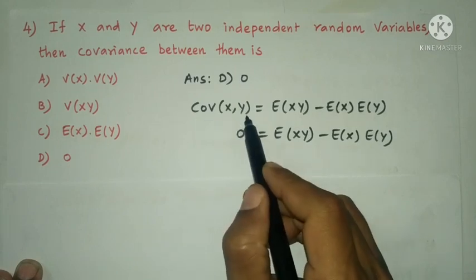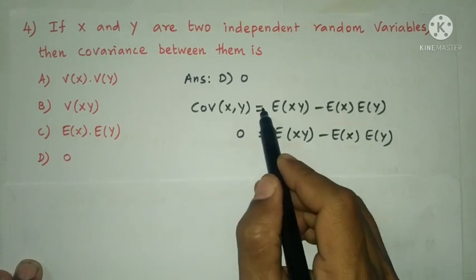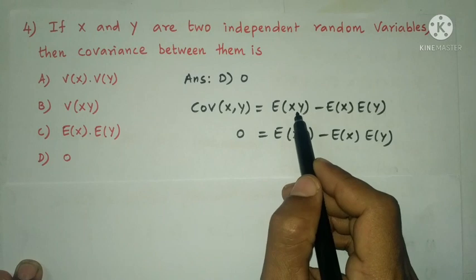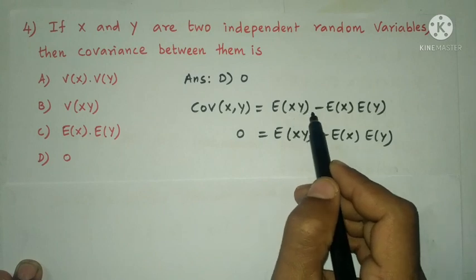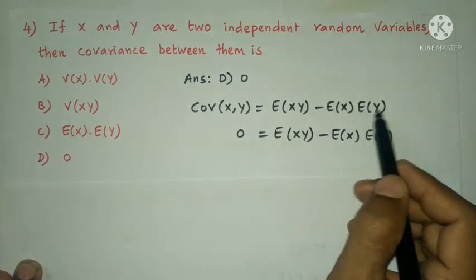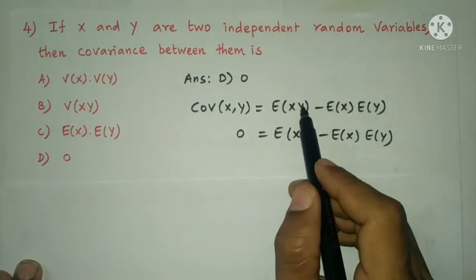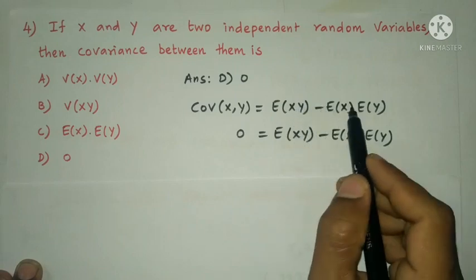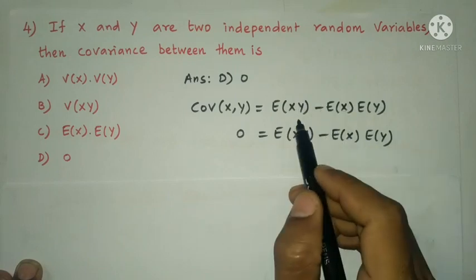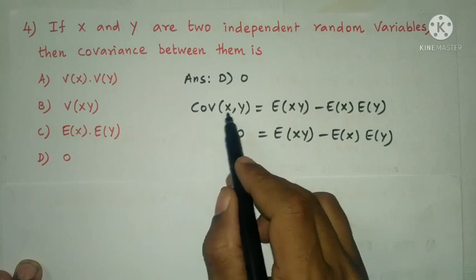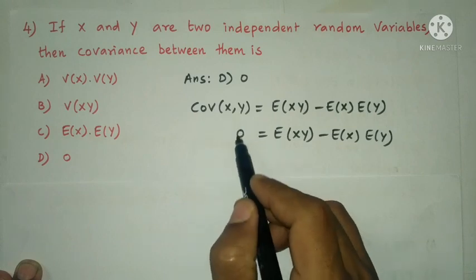The covariance formula is: Cov(X, Y) = E(XY) − E(X)·E(Y). When X and Y are independent random variables, this equals zero.